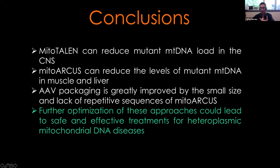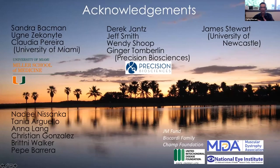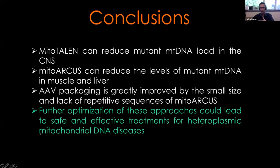In conclusion, mitotalin can reduce mutant mitochondrial DNA load in the CNS, with the caveat that we're not hitting enough neurons. Mitoarcus is a new platform for gene editing that can reduce mutant mitochondrial DNA in muscle and liver. A big advantage of mitoarcus is its small size and monomer nature, making it much easier to pack and deliver in an AAV than mitotalin or zinc finger nucleases. Further optimization of this approach could lead to a safe and effective treatment for heteroplasmic mitochondrial DNA disease. One remaining barrier is that rapid elimination of mutant DNA could cause mitochondrial DNA depletion, but one can reduce enzyme kinetics to cut more slowly to address this.